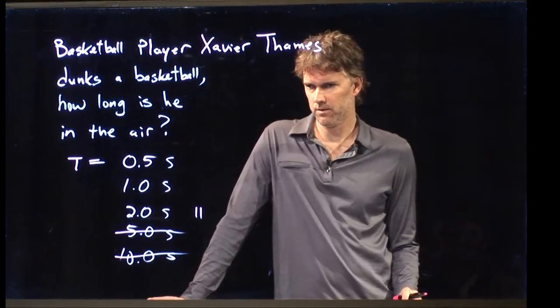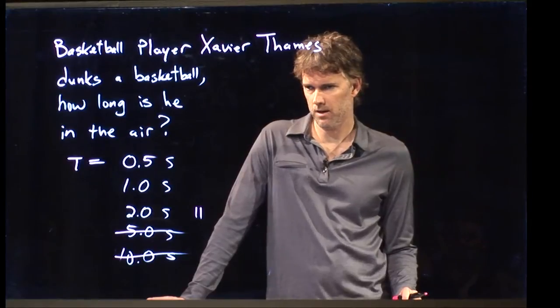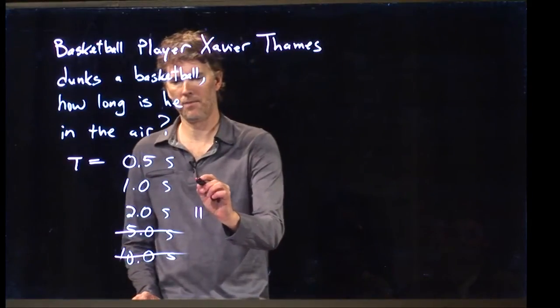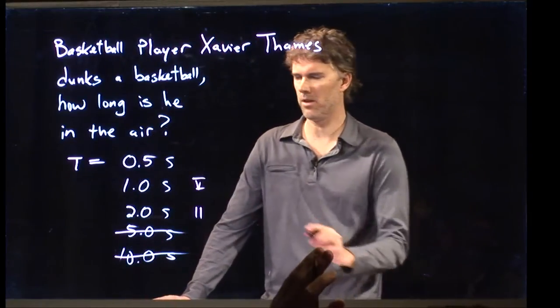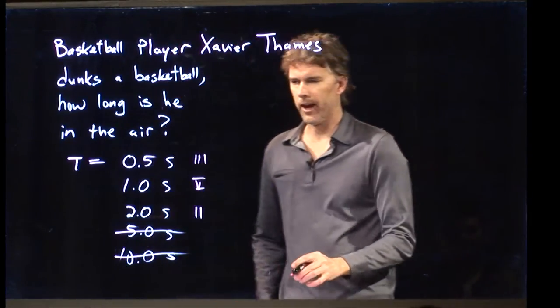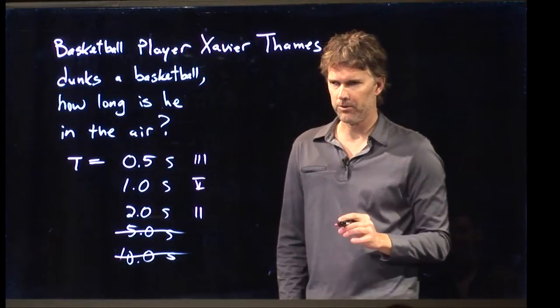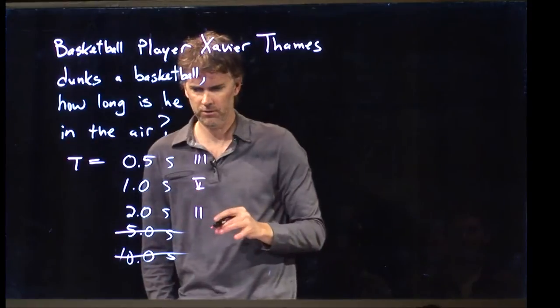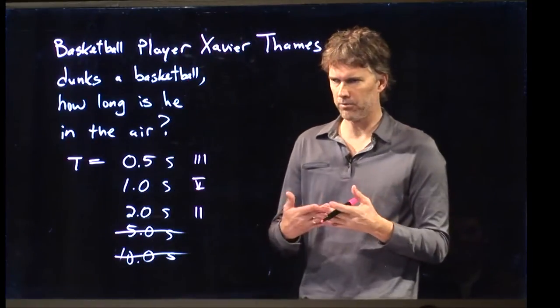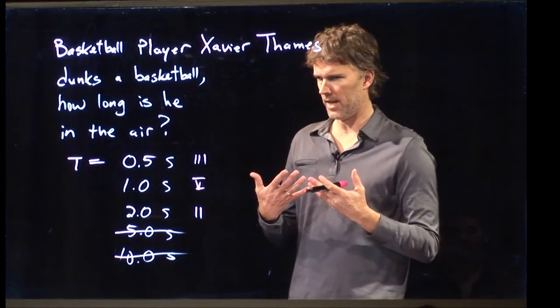What about one second? One second? Okay, five people like that. And then what about a half a second? All right, three people like that. So we've got a nice Gaussian distribution there between choices. And it looks like the average of all those is somewhere around one second. So that's our guess. We're going to say one second that he's in the air.